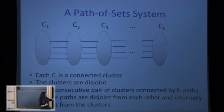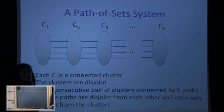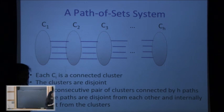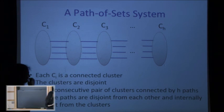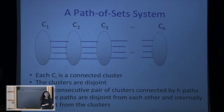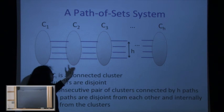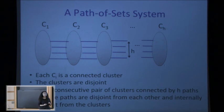We require that all these blue paths are completely disjoint from each other and must be internally disjoint from clusters: each blue path starts at one cluster, ends at the next, and cannot contain any other vertices belonging to any cluster. The parameter h is used twice: once for the number of clusters and once for the number of paths in every bundle.